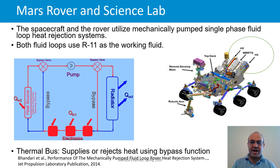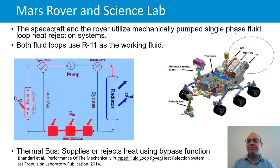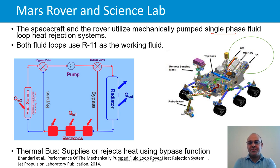The Mars rover and the Science Lab spacecraft utilize mechanically pumped single-phase fluid loop heat rejection systems. If the loop is single-phase, there is no phase change — it is a simpler and more reliable system. If there is phase change, the system is more efficient in terms of heat transfer since heat transfer is enhanced during phase change. Both the Mars rover and Science Lab use refrigerant R-11 as their working fluid.